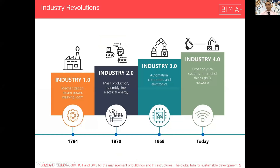Scientists have categorized technological progress as industrial revolutions. The first one happened because of using steam power in the 17th century. The second one was because of mass production and using electrical energy. The third one was because of automation. And now we are in the fourth one, which is related to IoT and using cyber-physical systems.